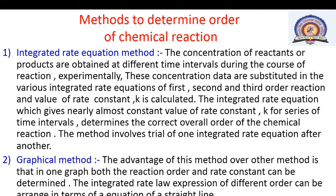Let us go to the methods to determine the order of a chemical reaction. There are different methods used. The first one is the integrated rate equation method. We have already derived the integrated rate equations for zero, first, and second order reactions, and with the help of these equations we find out the value of k and then judge the order of reactions.